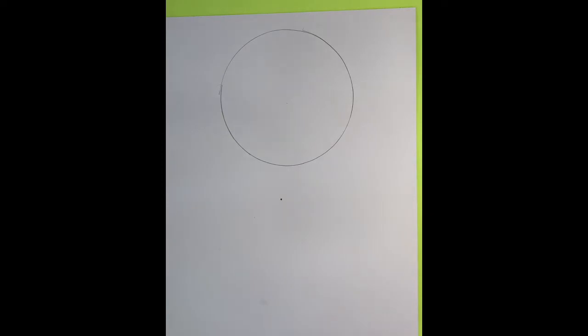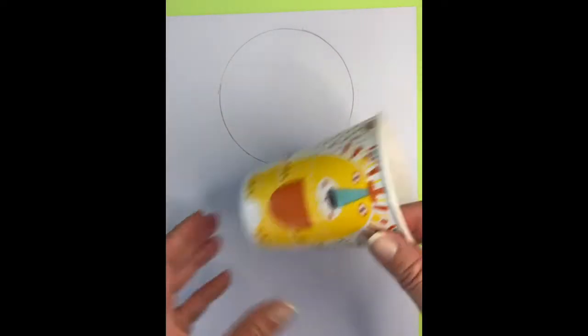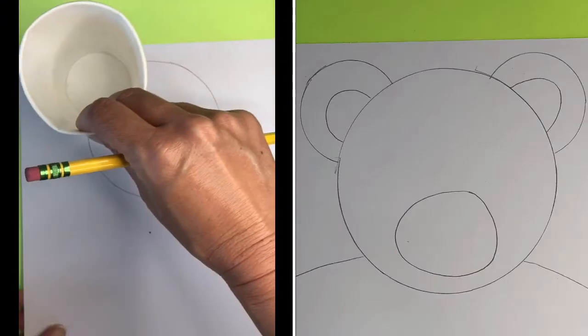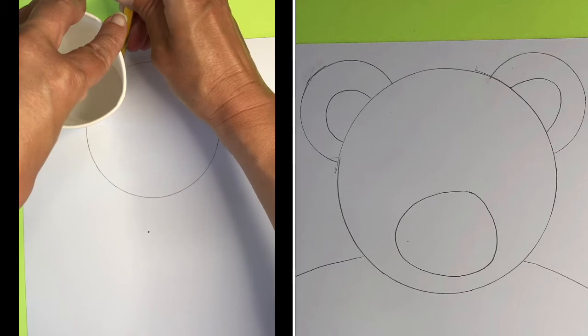Next, you're going to find some smaller circles. So I think I'm going to be using the bottom of this cup, and we're going to use this to make the ears for the animal. So you're going to trace around.